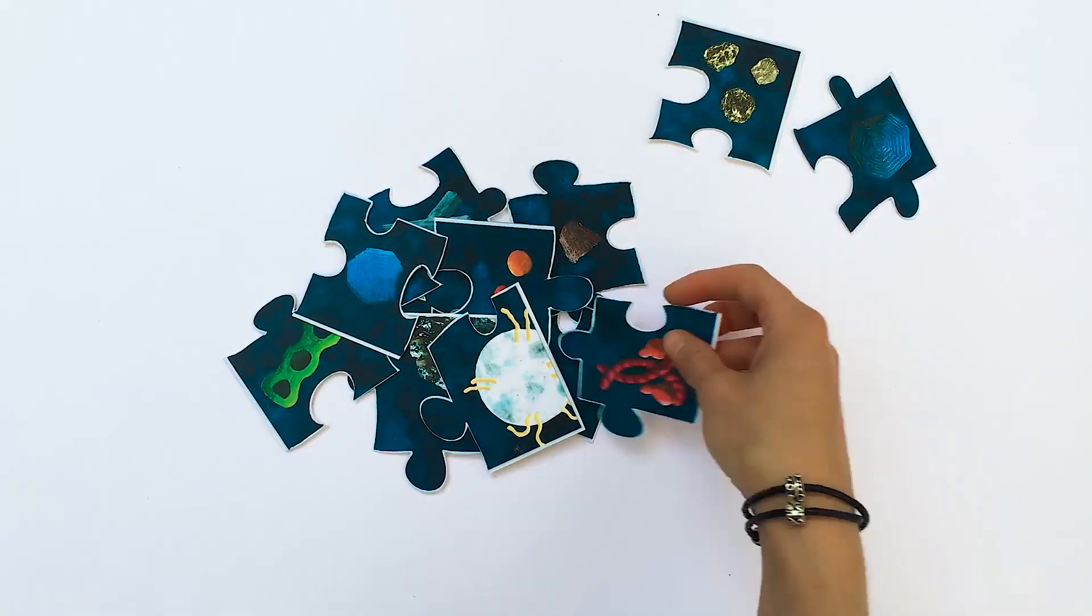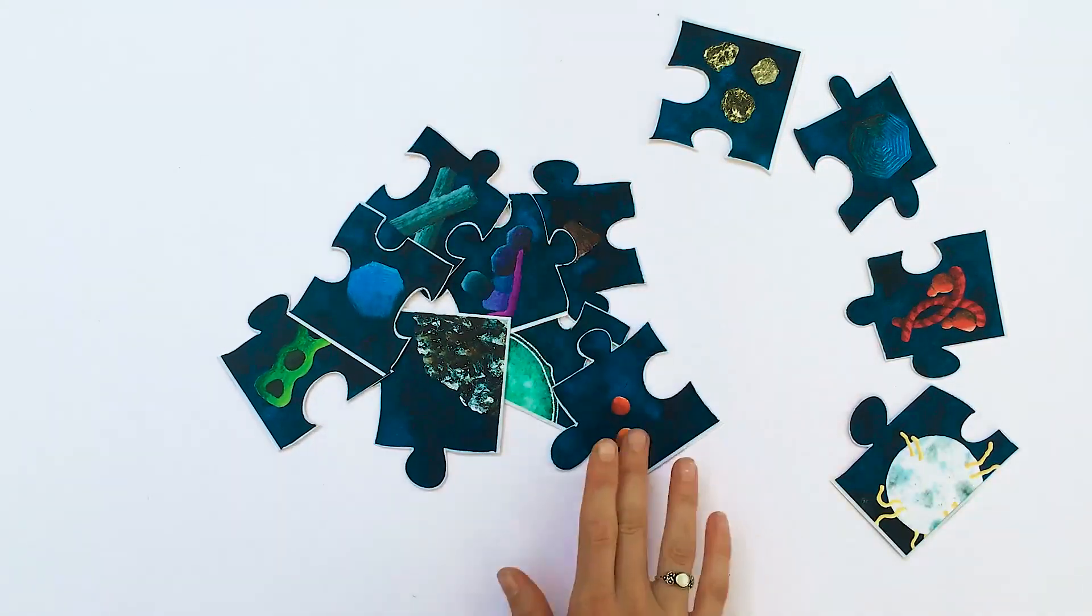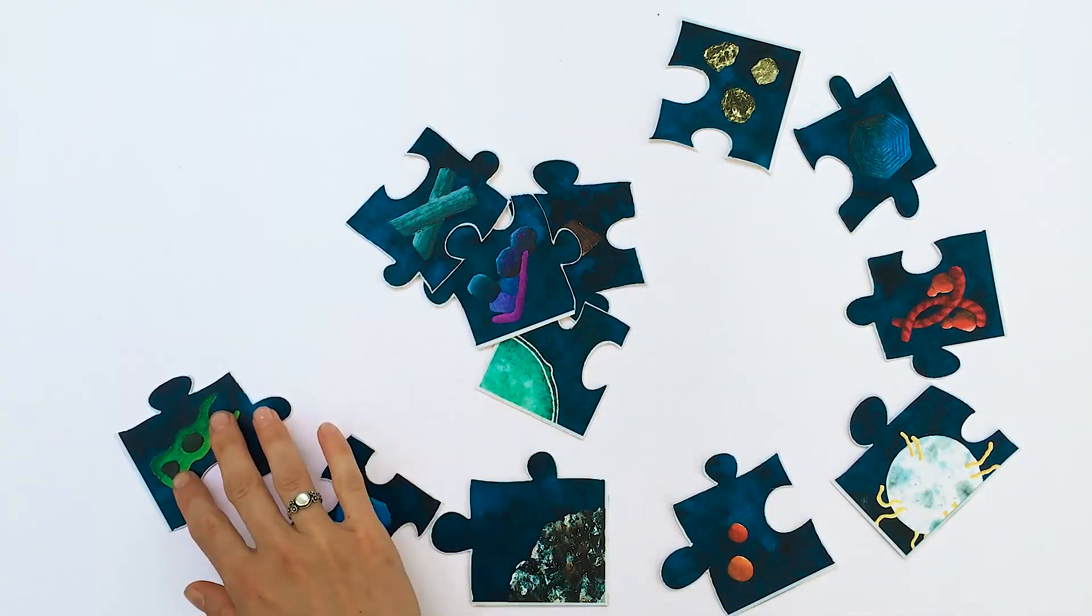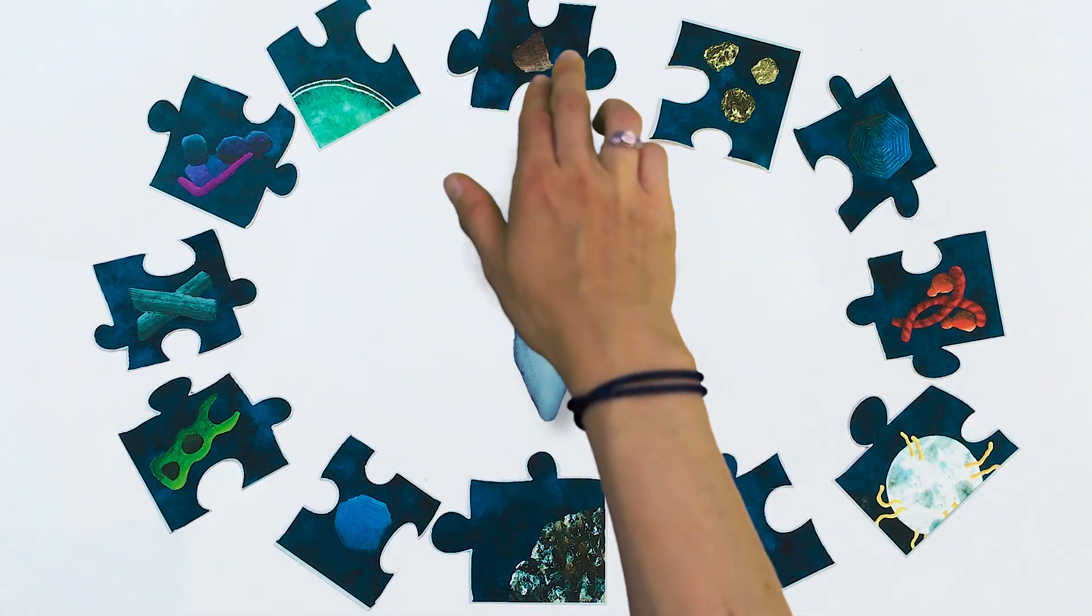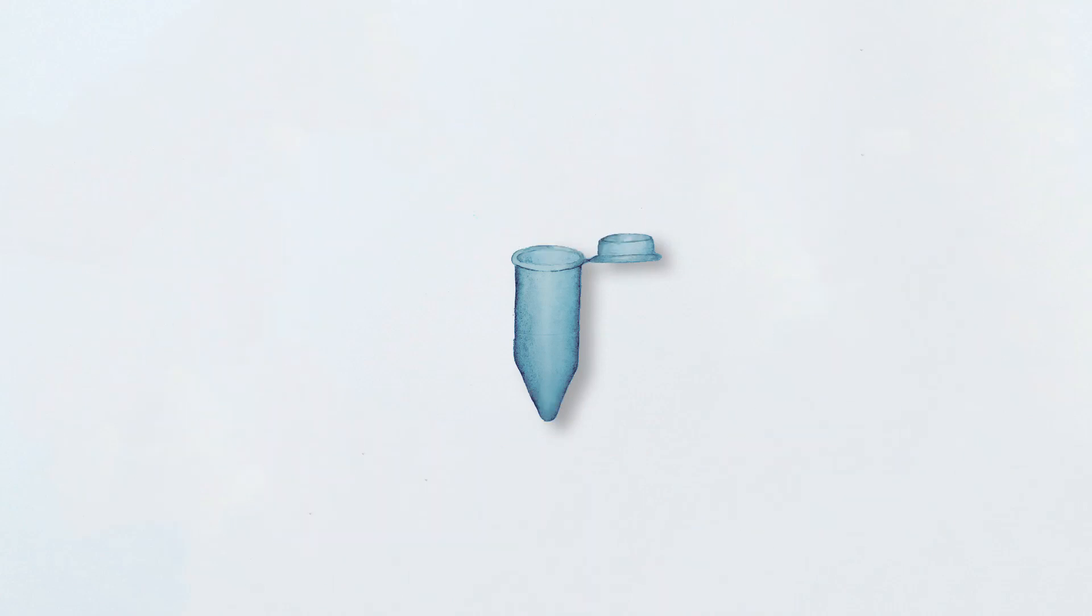To shed more light into a complex cellular machinery like this, it often helps to take it apart and rebuild it. Therefore, we isolated 21 components from the cell and reassembled them in the test tube.